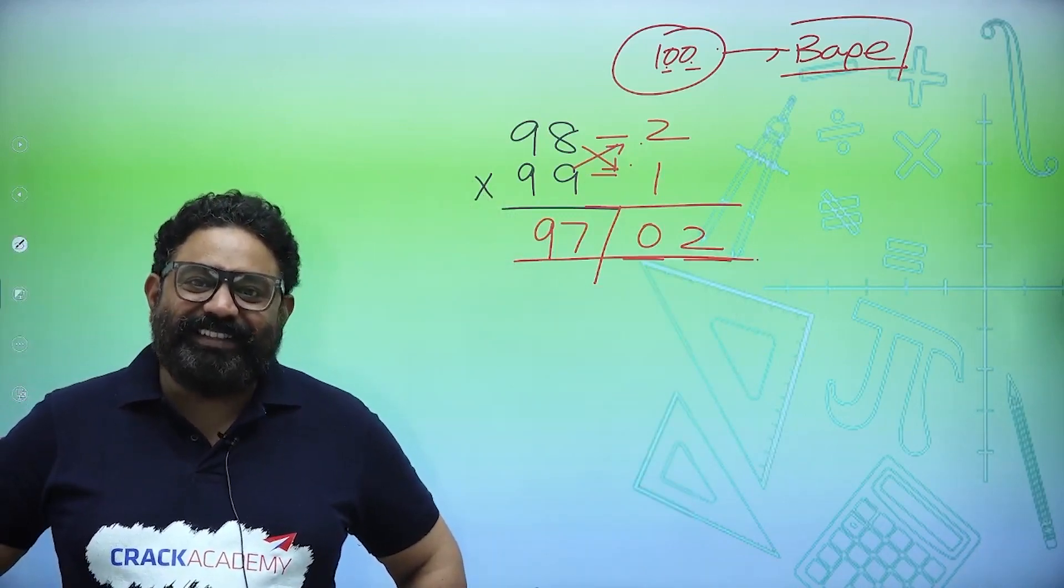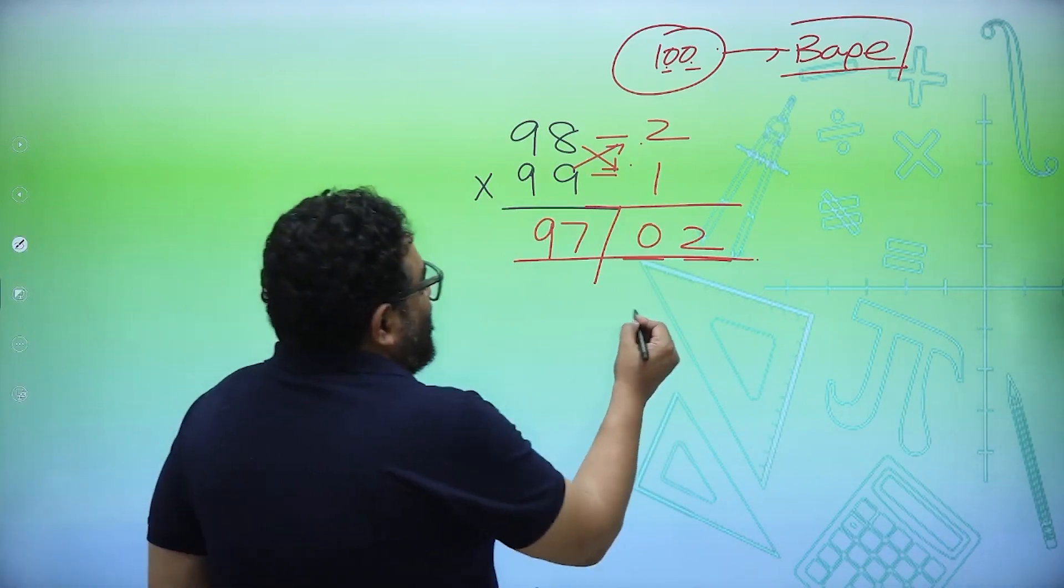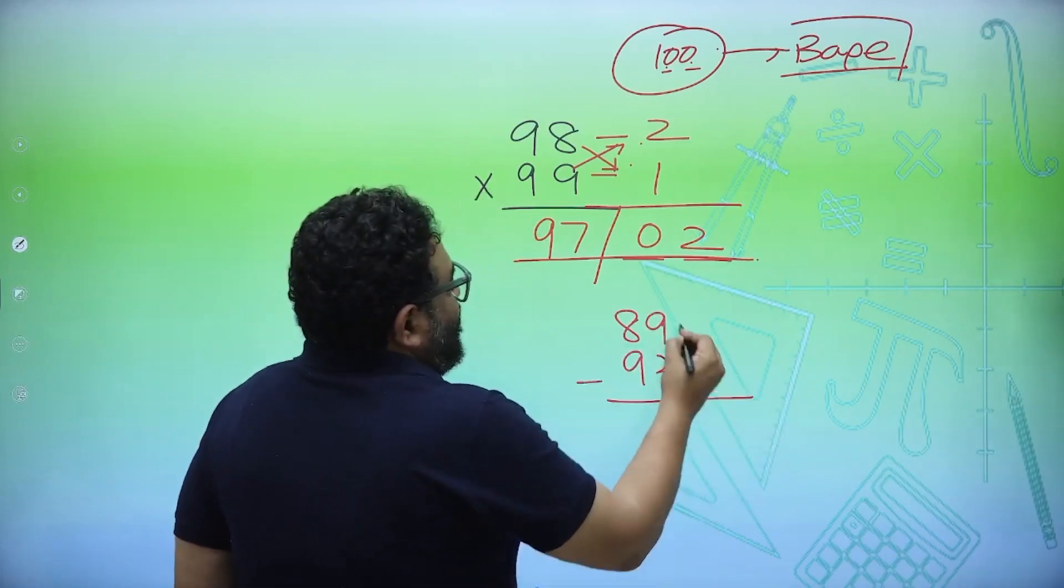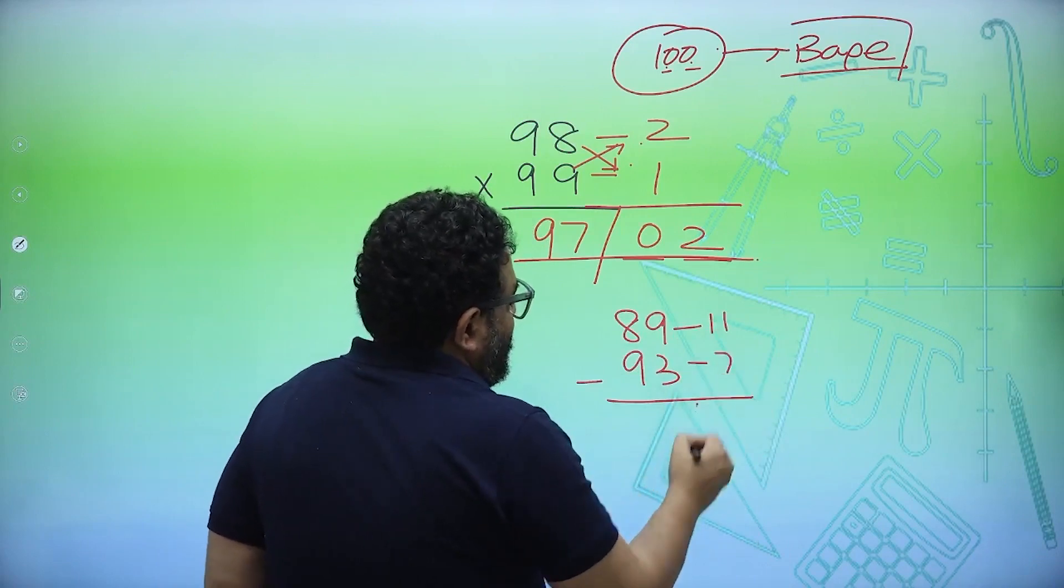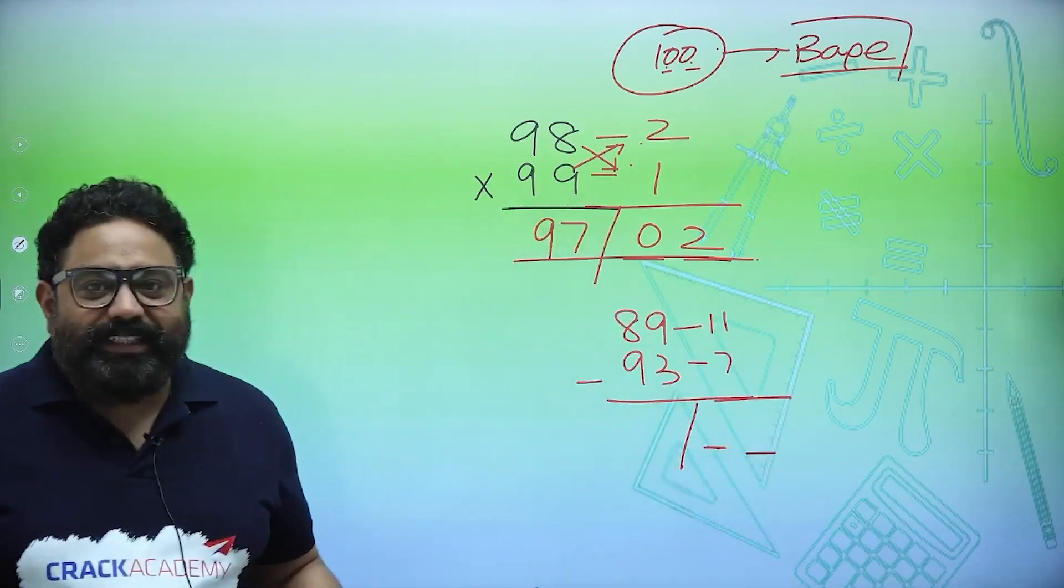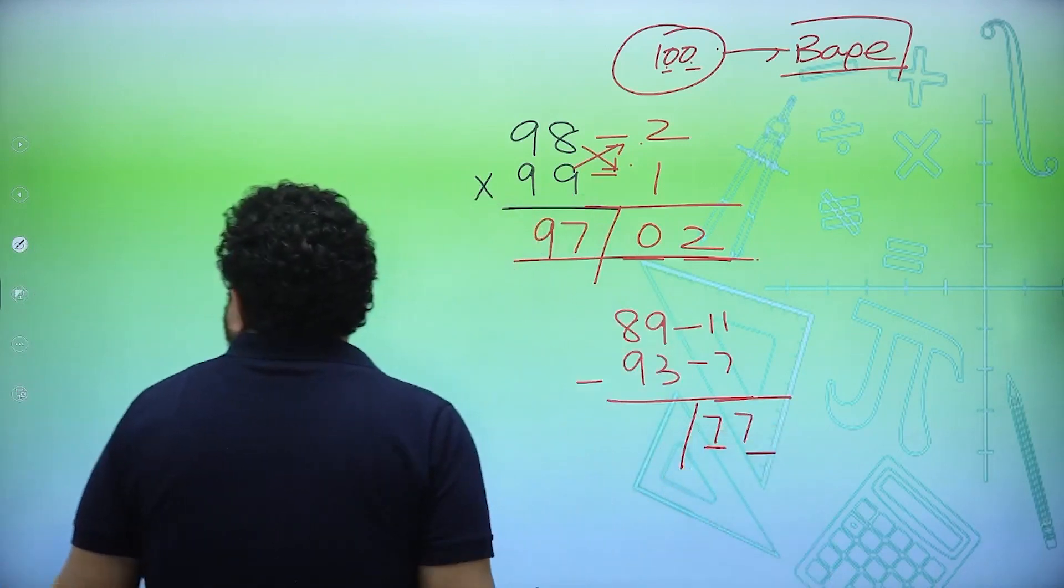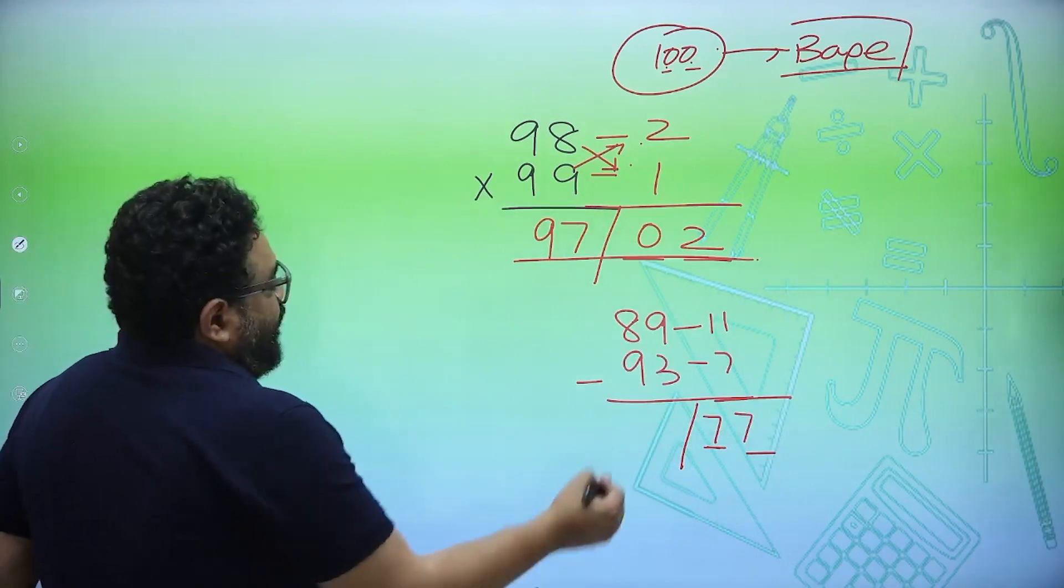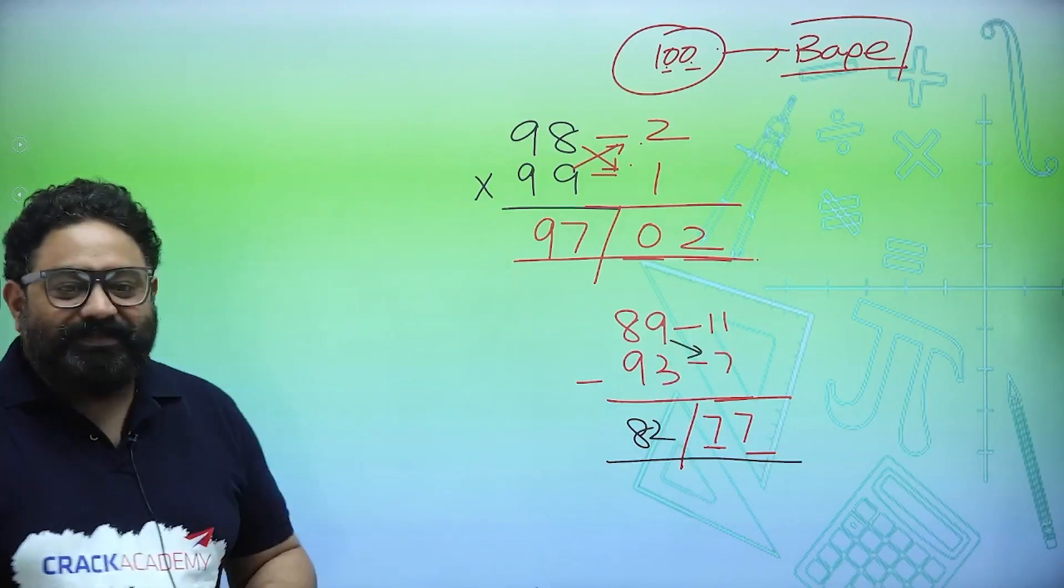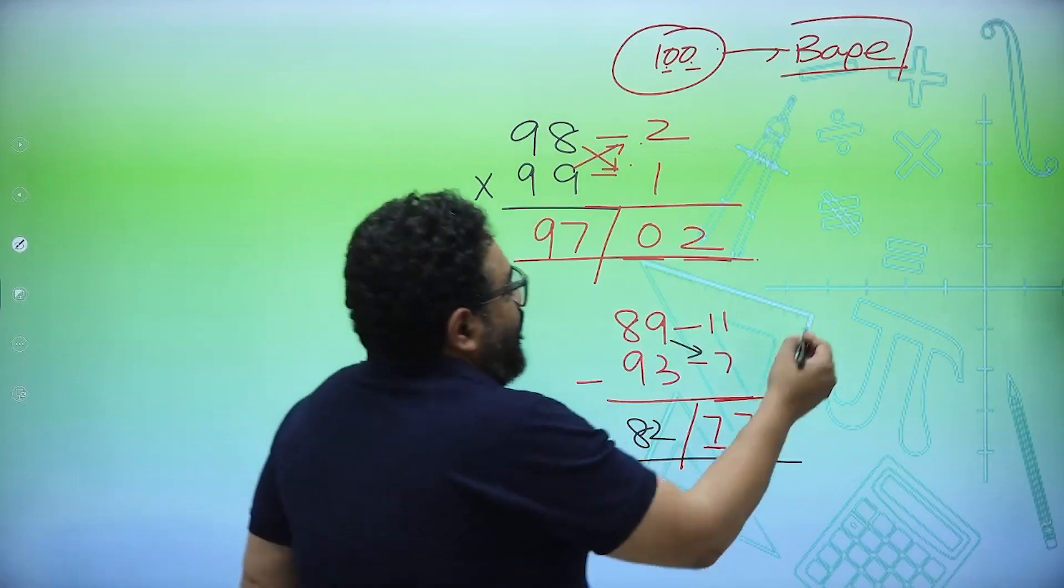Again I see, what is 89, 99 into 93? So this is minus 11 less than 100, this is minus 7 less than 100. Make a partition and then two spaces. Now what is 7 elevens are 77, and then what is 89 minus 7 is 82. Double check, yes, this is so easy.